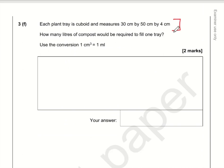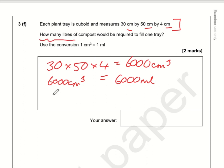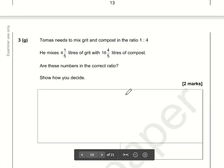For part 3f, we need to work out the volume of the plant tray by multiplying the three dimensions: 30 times 50 times 4, which is 6,000 cubic centimetres. One cubic centimetre equals one millilitre, so that's 6,000 millilitres. One litre is 1,000 millilitres, so to convert we divide by 1,000: 6,000 divided by 1,000 is 6 litres.